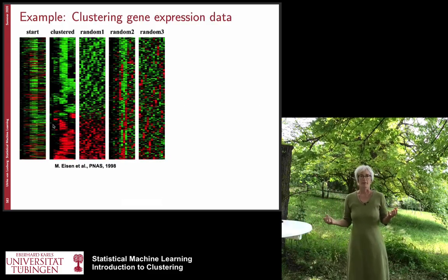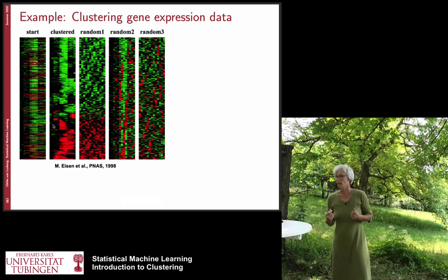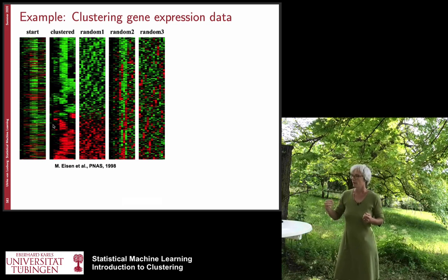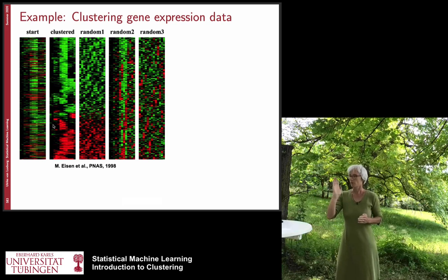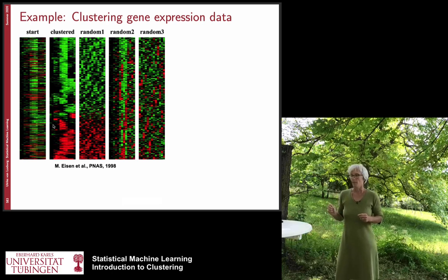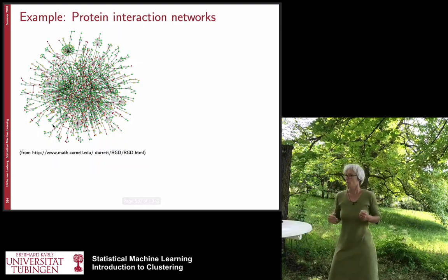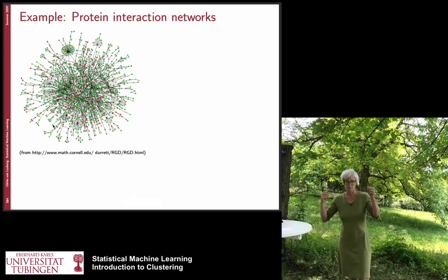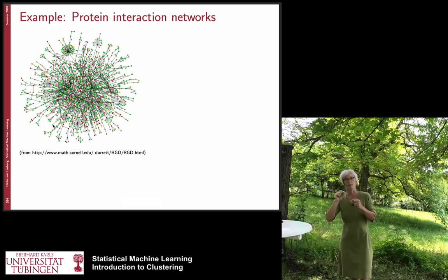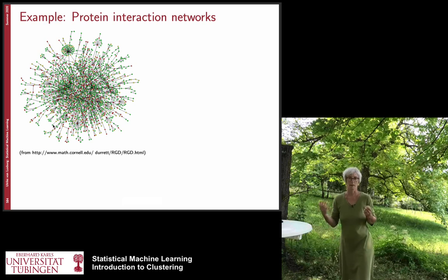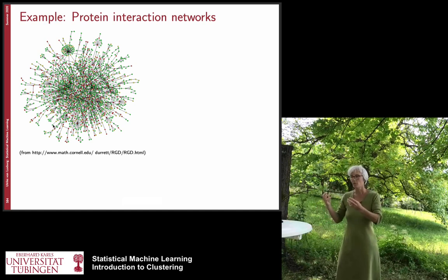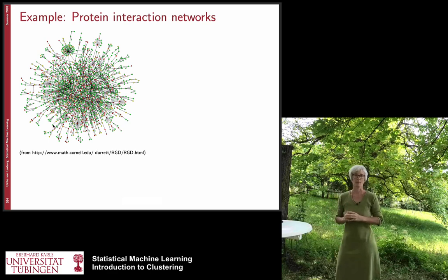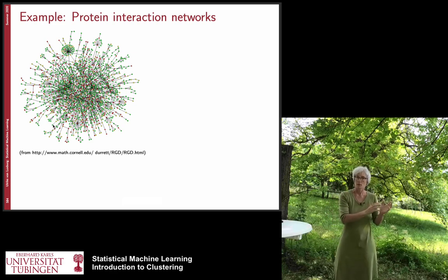Here are a couple of examples of clustering algorithms. One example is clustering gene expression data, where the rows correspond to different genes and the columns correspond to different measurements, and you want to cluster genes according to how active they are under certain circumstances. Another example is a protein interaction network, where vertices are proteins and edges exist between two proteins if they tend to interact. You want to find functional subgroups by splitting the graph into separate pieces with few connections between pieces but many connections within each piece — groups of tightly interacting proteins that are not so closely interacting with other groups.